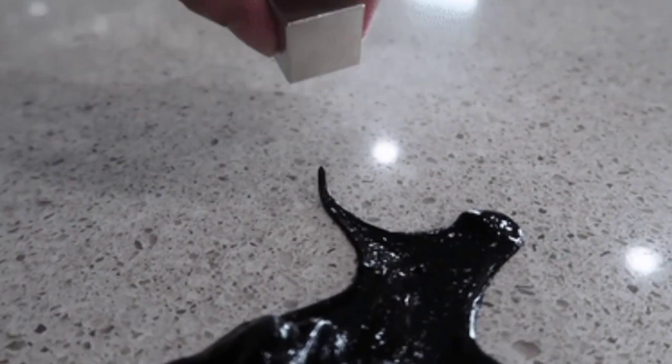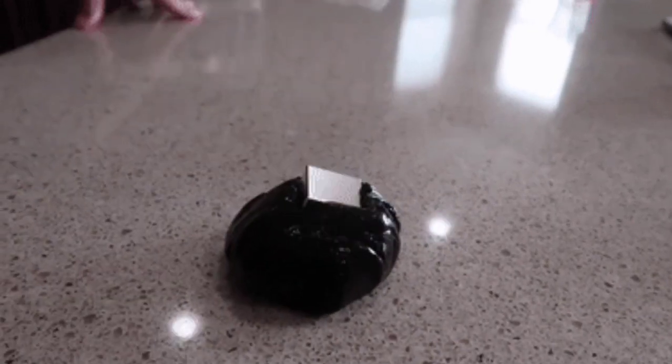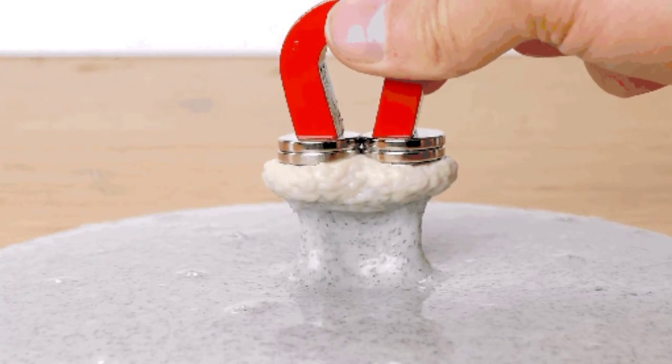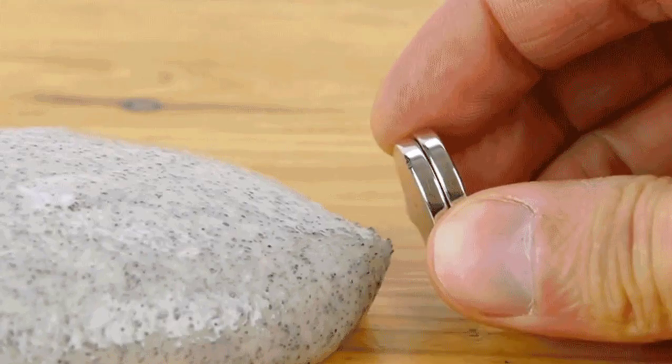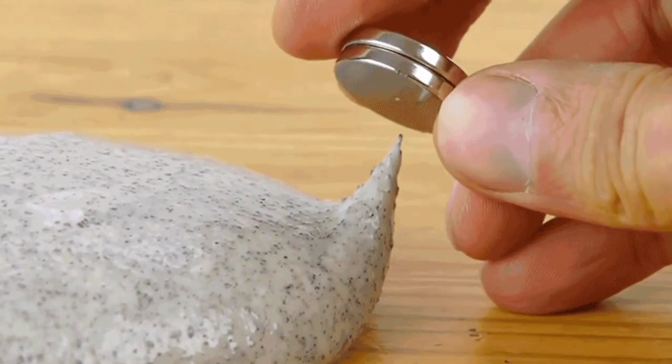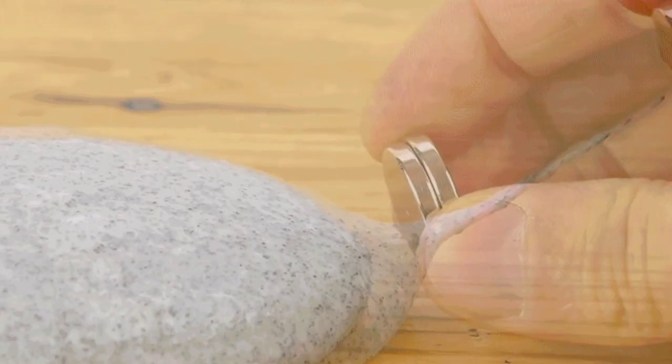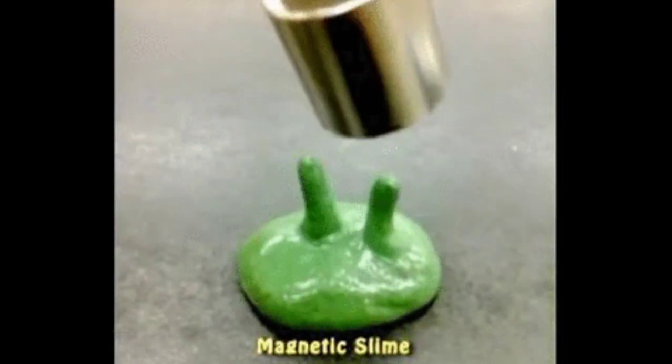Here are some more details on how the liquid robot works. The MPTM is enclosed in a thin plastic casing, and the magnetic field is applied using a coil of wire. The size and shape of the robot can be controlled by the strength and frequency of the magnetic field. The robot can move by flowing through the magnetic field.